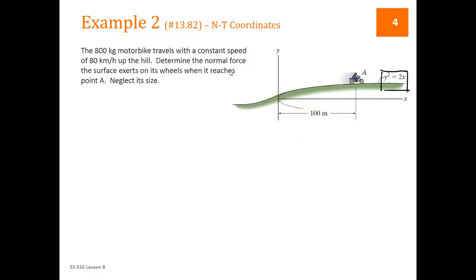We have a motorbike. It's 800 kilograms mass, moving with a constant speed of 80 kilometers per hour. We're supposed to determine the normal force the surface exerts on its wheels when it reaches point A. Point A is still on a slope, not a big slope, but it's still on a slope.